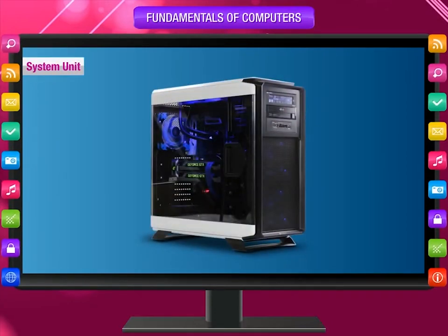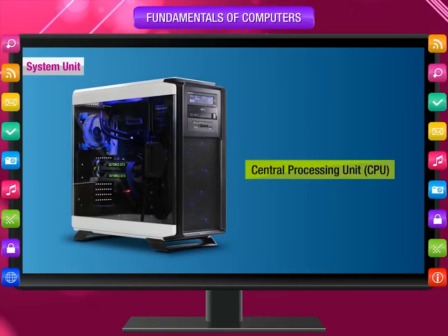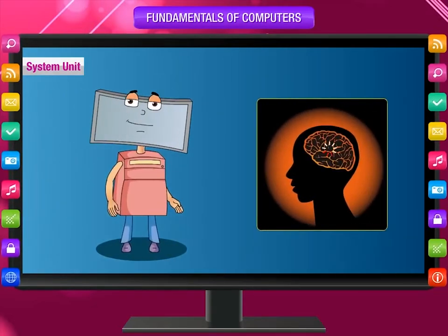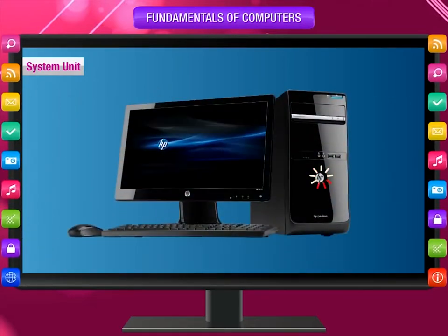The system unit is the most important part of the computer. It has a main component called the microprocessor or Central Processing Unit (CPU). CPU manages all the activities of the computer. All other parts are connected to the system unit through wires and cables. The actual processing is done within this unit, which is why it is called the brain of the computer. It takes input through the keyboard, stores it, does all the processing and calculations, and displays results on the monitor as per your instructions.